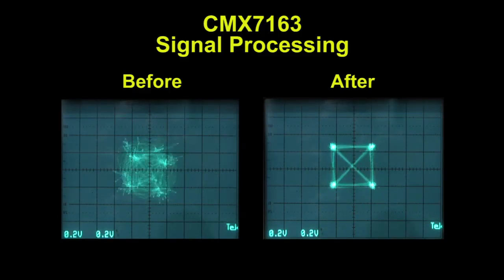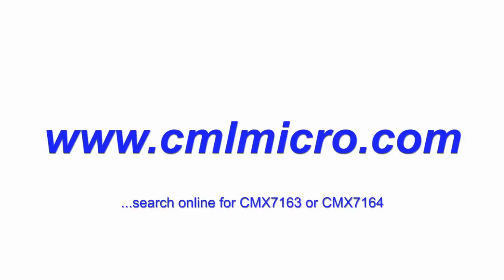So in just a few minutes we have reviewed the four different types of constellation diagrams that are provided by the CMX 7163. This concludes our video. Please visit the CML website to download the script files that were used in today's video, and please contact CML if you have any questions about the products that you have watched today.